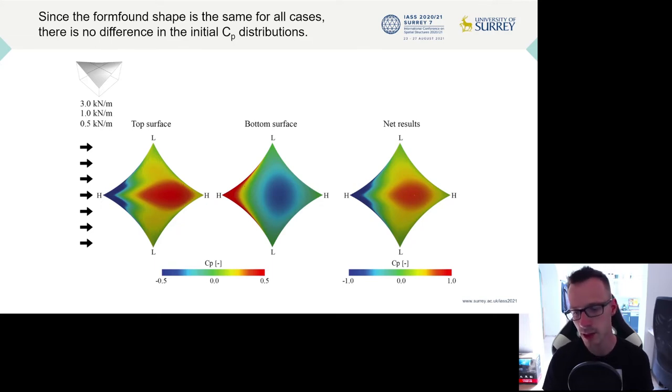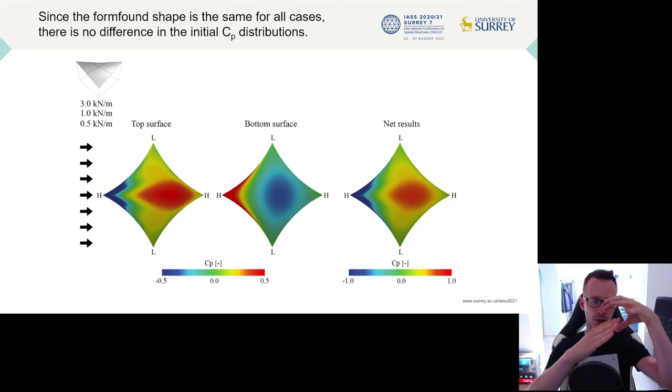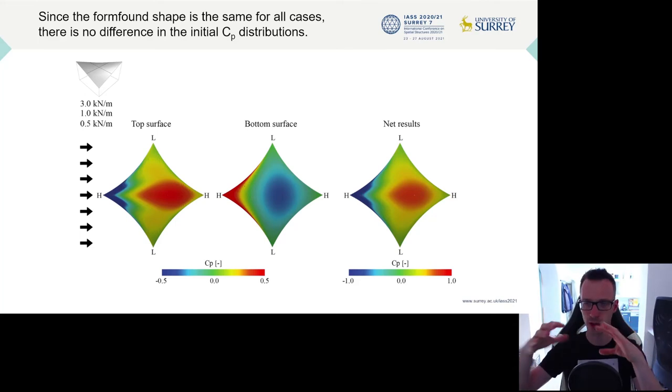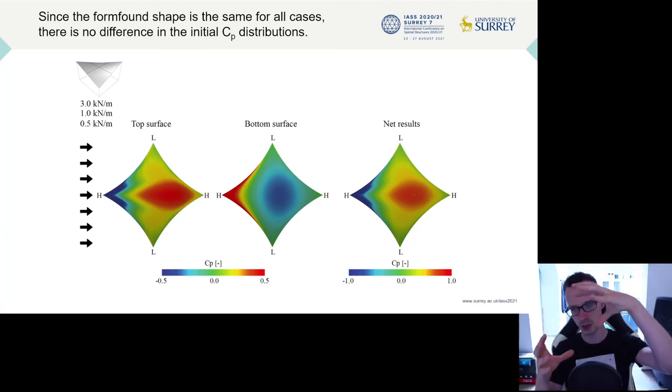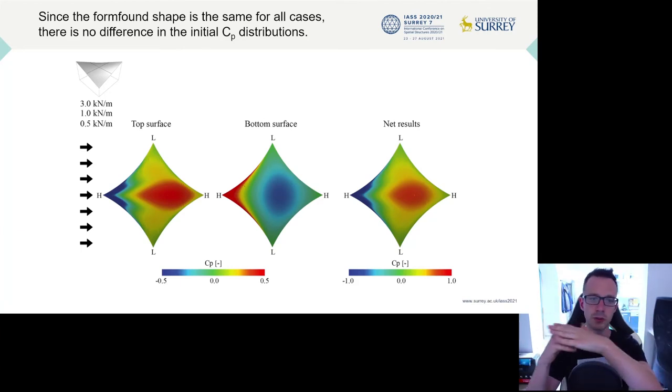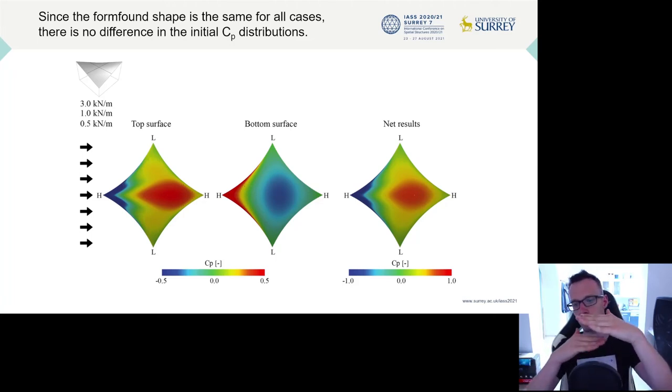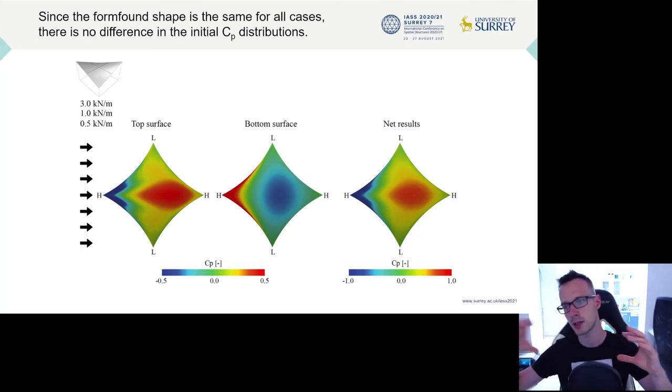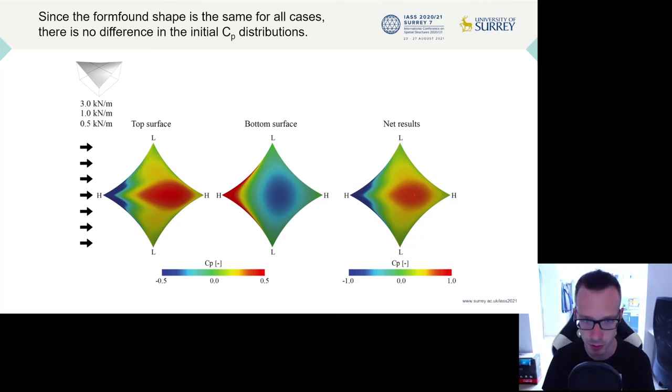So what you can see for the pressure distribution is that with the high point under attack, you get suction at this high point, so it wants to move backward and upward. And as you move more downwind on the structure, you get this large pressure zone, which is a combination of the effect of the pressure pushing down at the top surface, and suction occurring at the bottom surface due to the venturi effect occurring between the ground and the structure, which will cause a speed-up in the wind and suction at the bottom surface.